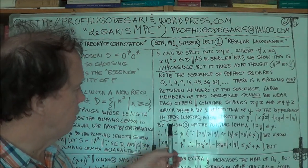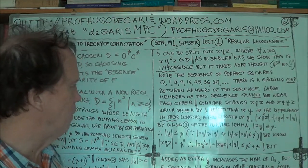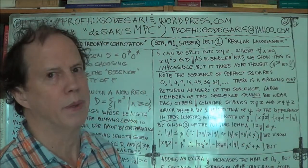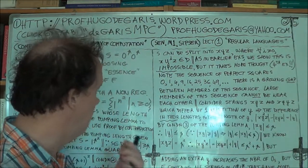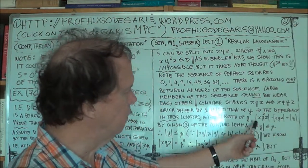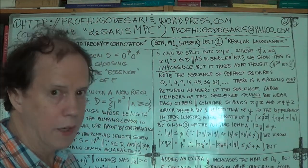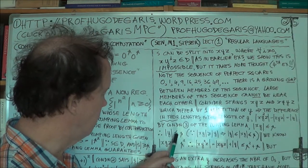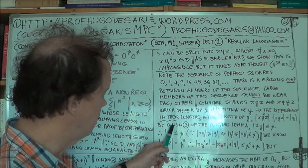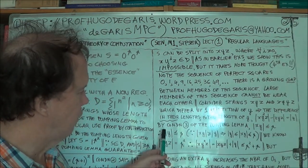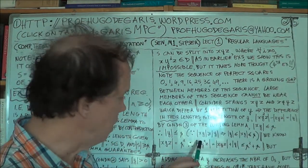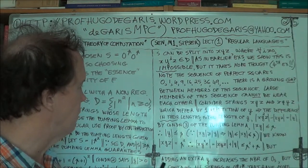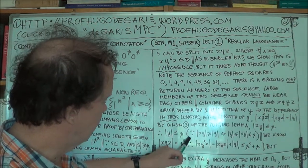Now again, we use our famous condition 3 of the pumping lemma, which just says this, that the size of XY is going to be less or equal to P. P is your pumping length. We've used this quite a few times now. Now, from this, given that we have a unary language, if this is true, then this is true. So just the size of Y must be less or equal to P.